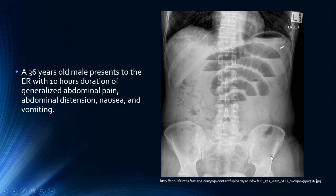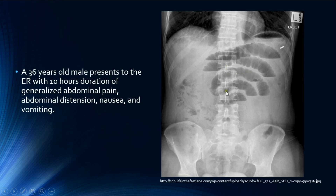This is an erect abdominal radiograph in the AP projection, which is the standard projection for abdominal radiographs. I do not see any patient details, so I would like to confirm this is the correct patient with the hospital number, date, and time mentioned. Regarding technical quality, we can see both hemidiaphragms, but I cannot see the pubic symphysis nor the hernial orifices — therefore this is a technically inadequate radiograph. However, the penetration is adequate because we can see the spinous processes through the vertebral bodies.